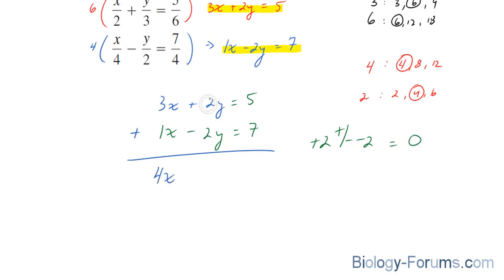4x, and we just determined that these two would become 0, is equal to 5 plus 7, which is 12. We solve for x, and we end up with 12 over 4, which is equal to 3.